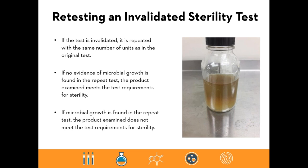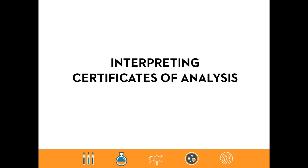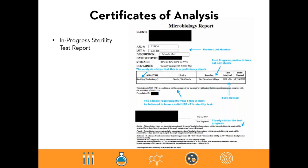This is an example of an in-progress sterility test report. Product identifiers include a lot number or testing lab identifier, description of the product, and additional tracking information. In the results box, the report shows no growth at three days — notice it does not say 'sterile,' as that term is reserved for the final test result. The test method is cited as USP 71 and the analysis is listed as a sterility test with a preliminary read designation — not a final result.